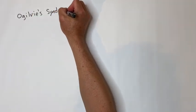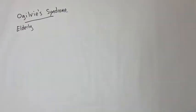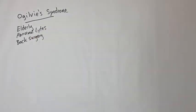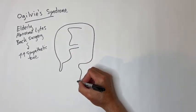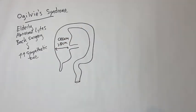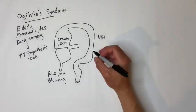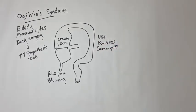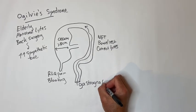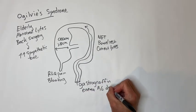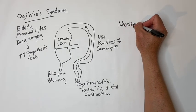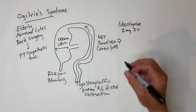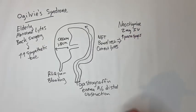Ogilvie's syndrome is also known as colonic pseudo-obstruction. The classic presentation is an elderly patient with electrolyte abnormalities, recent back surgery, or retroperitoneal inflammation. It is thought to be caused by too much sympathetic tone. The cecum will be dilated typically about 8 to 10 centimeters with right lower quadrant pain and bloating. Initial treatment is NG tube, bowel rest, correcting electrolyte problems, and minimizing narcotics. Try a gentle gastrografin enema to rule out distal obstruction. If conservative measures are not working, try 2 mg of IV neostigmine, which increases parasympathetic tone and should make the colon contract.